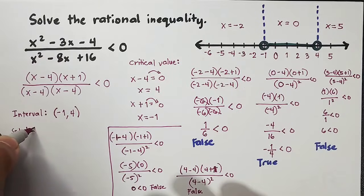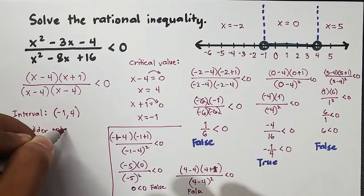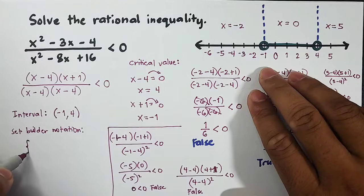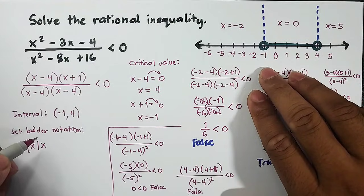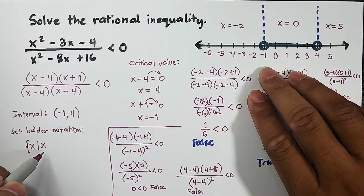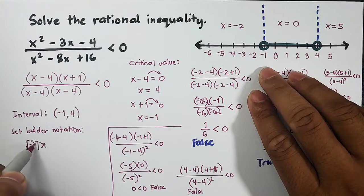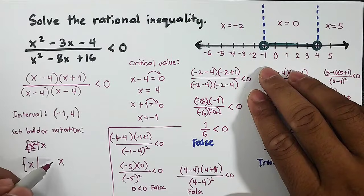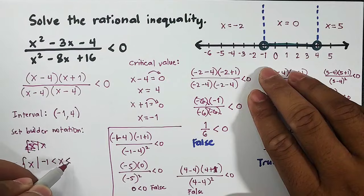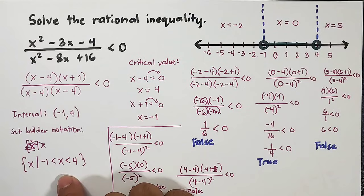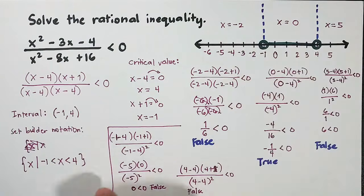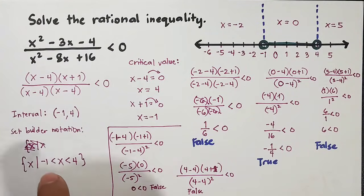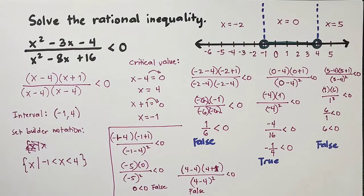Now for set builder notation. In set builder notation, this is: {x | x > -1 and x < 4}. It became like this because x is in the middle. This reads as 'x such that x is greater than -1 but less than 4.' So I hope you learned something from this video on how to solve rational inequality.